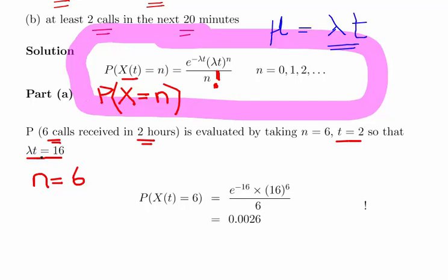Now that's really the trick of the question, so it's lambda times t here, but if you expect 8 in 1 hour, you should expect 16 in 2 hours, that makes sense.